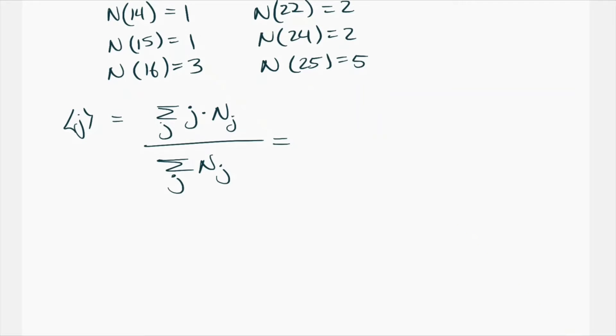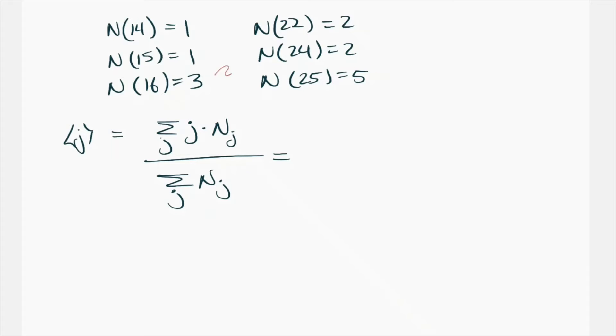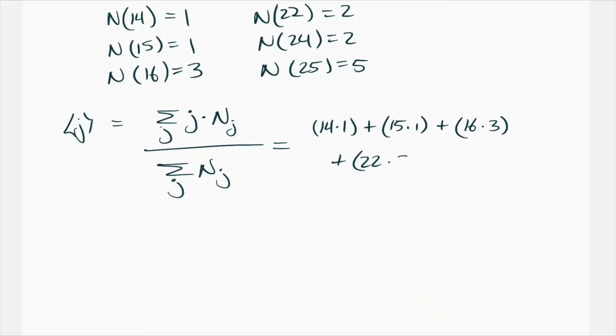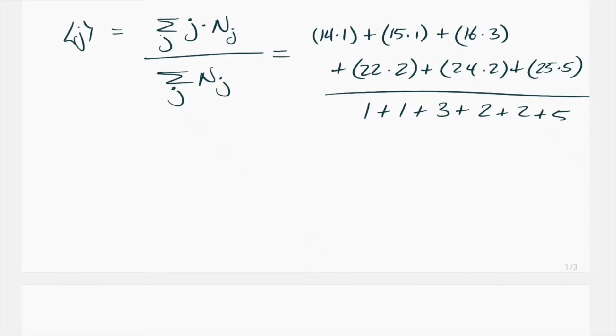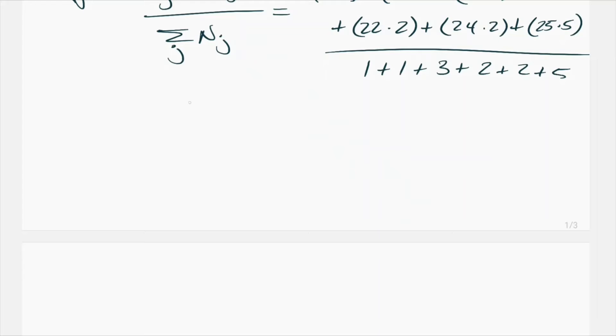We're going to do the sum over all the j's of each particular age times the number of people that have that age divided by all of the people in the histogram, the total number of people. When we actually do that, we'll do 14 times one plus 15 times one plus 16 times three plus 22 times two plus 24 times two plus 25 times five divided by one plus one plus three plus two plus two plus five. Obviously, anyone can do this math. Final answer, expectation value of j equals 21.